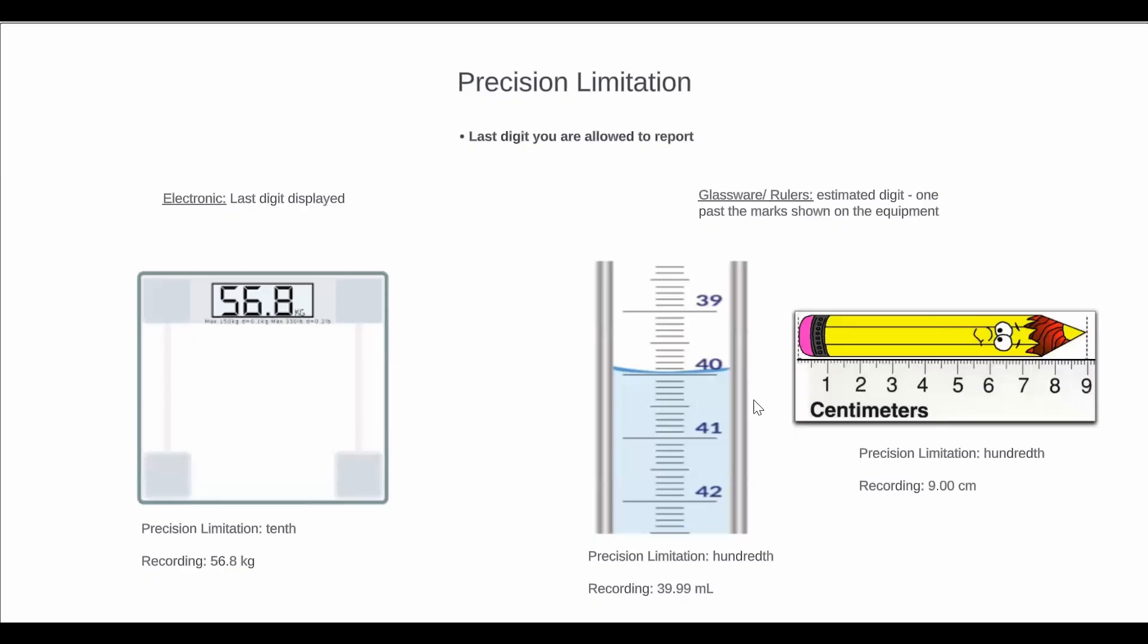And we can see on the ruler on the right side, again, the markings are in tenths, so we have to go one past that, so our precision limitation is in the hundredths. And in my opinion, that line is right on the dot of 9 centimeters, so I would record this as 9.00 centimeters. Your final estimated digit can vary a little from the real value, just make sure it's pretty close.